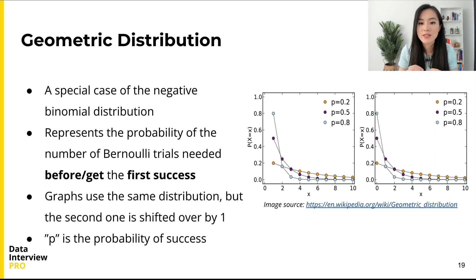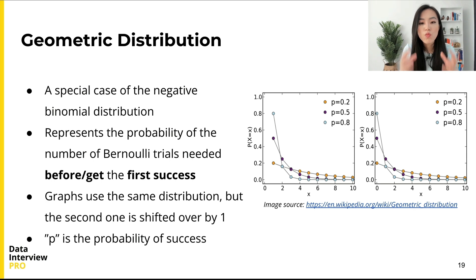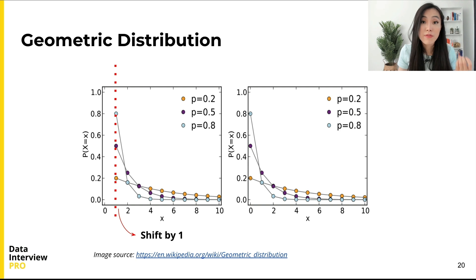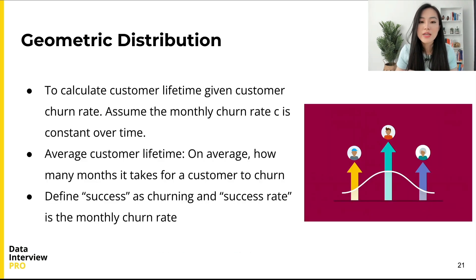Sometimes it also refers to the number of trials needed before the first success. The difference between the two definitions is that one includes the first success while the other excludes it. Both are geometric distributions and the choice depends on convenience and context. The one parameter for the geometric distribution is p, the probability of success. As you can see from the graph, the two definitions share the same shape in terms of their probability mass function, but the first — the one that includes the first success — is shifted over by one on the x-axis.